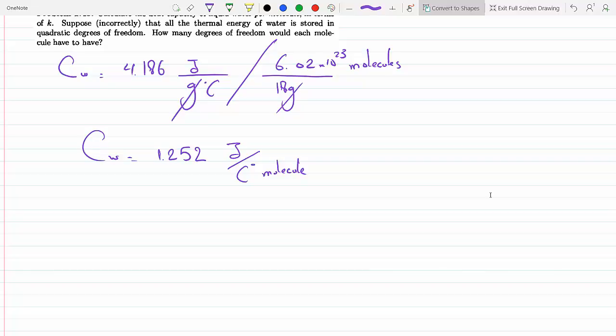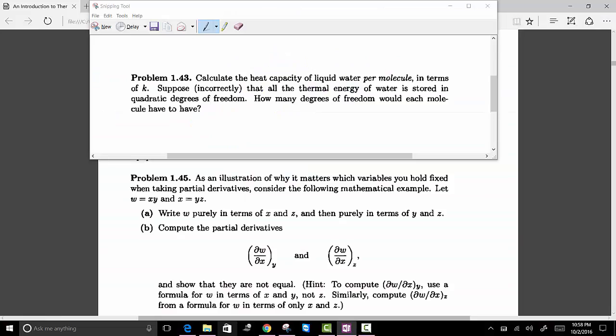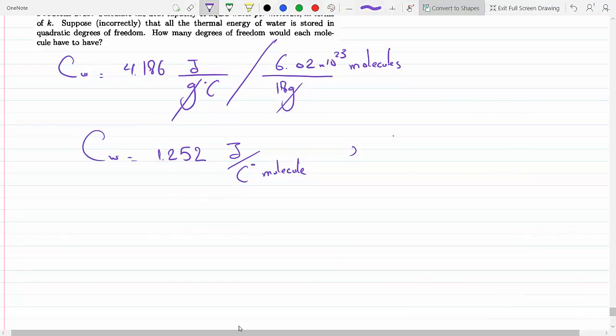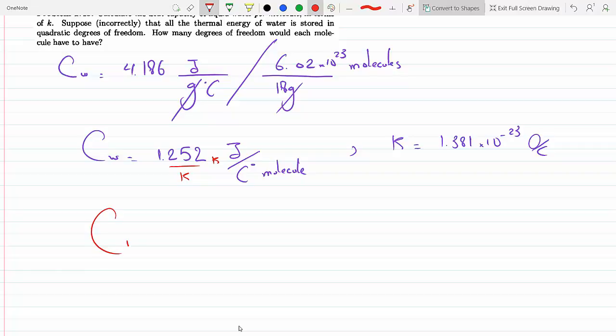Let me look up K here. Boltzmann's constant is 1.381 times 10 to the minus 23 joules per Celsius. So if I divide this by K and multiply it by K to get it as a ratio of K, I find that C_w is 9.06K per molecule of water.